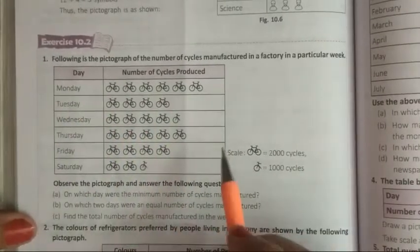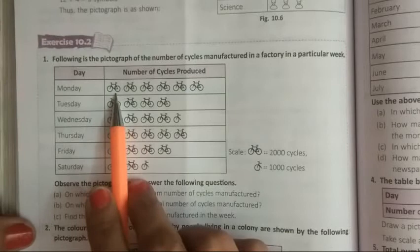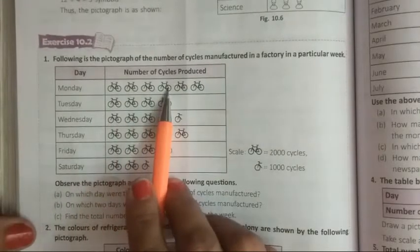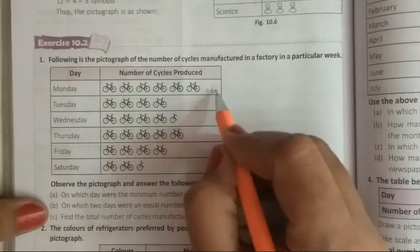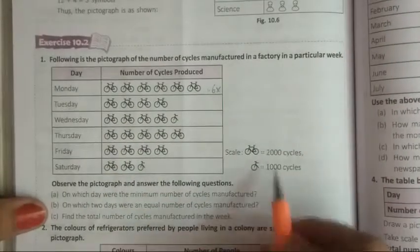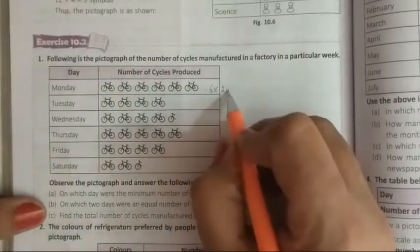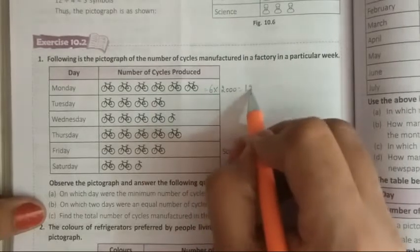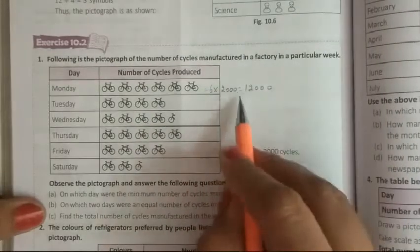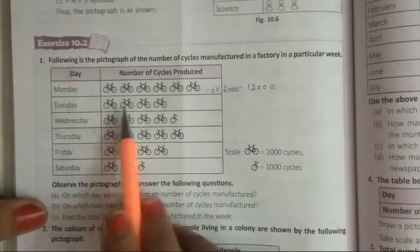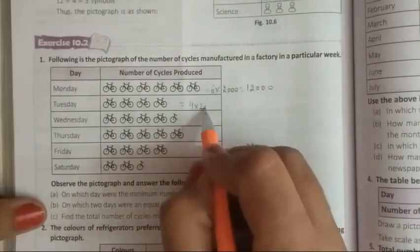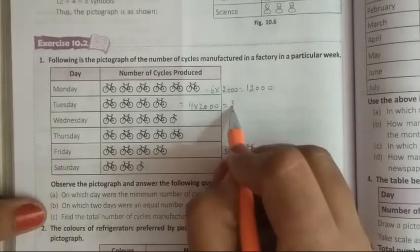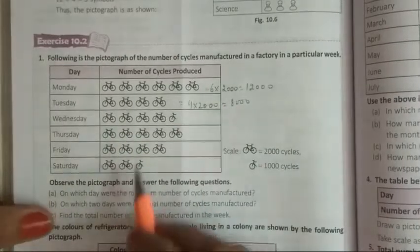To yaha number of cycle product. Monday ko kitni cycles product ki gai hai? Cycle count karenge, one, two, three, four, five, six. Kitni hai total cycle? Six hai, or one complete cycle kis ko represent kar rhi hai? 2000 ko. To total kitni ho gi hai, hamari yaha pe ye? 12,000. Ye number of cycle aage hai. Tuesday ko, one, two, three, four. To hum yaha kya karenge? Four ko kis se multiply kar lenge? 2000 se multiply kar lenge. That is equal to 8,000.